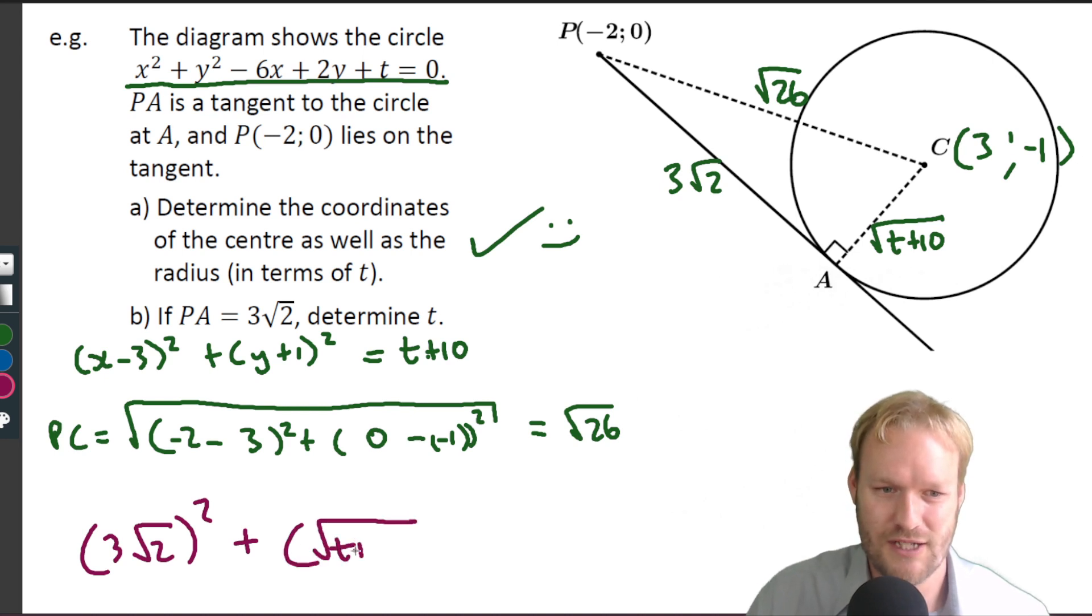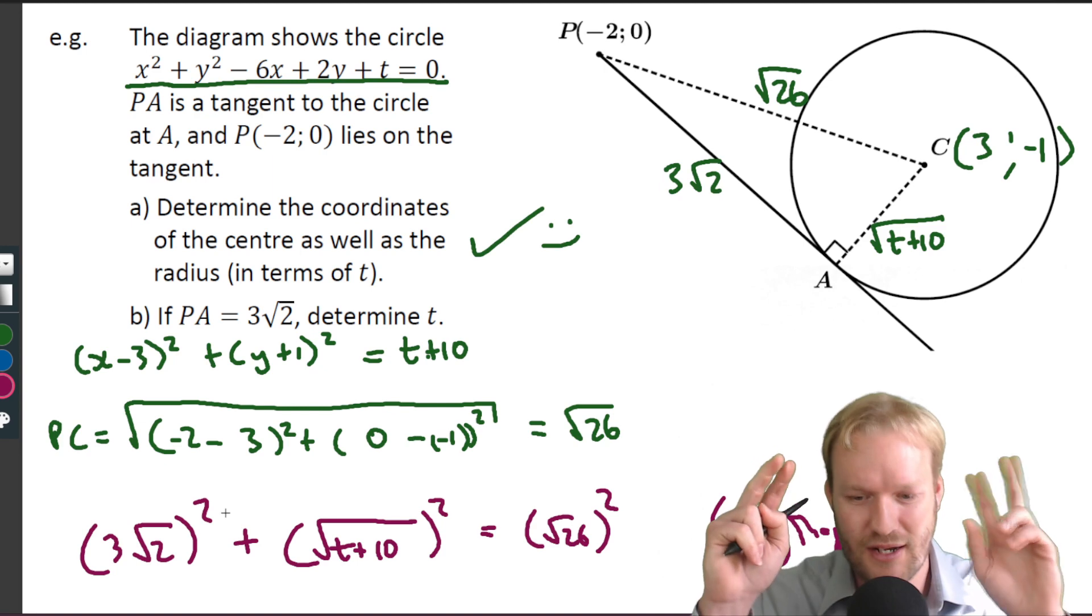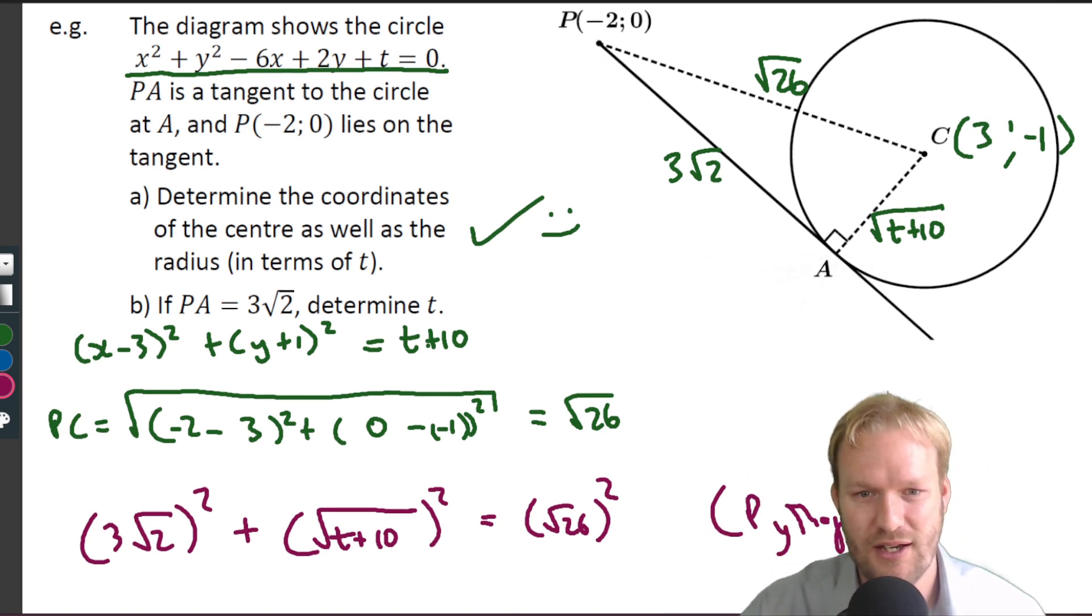Plus (√(t + 10))² equals (√26)². And the reason I can make that statement is Pythagoras. Okay, so I am showing the squares. I know that the square roots are going to kind of cancel and all of that. I'm writing my reason because that's important.